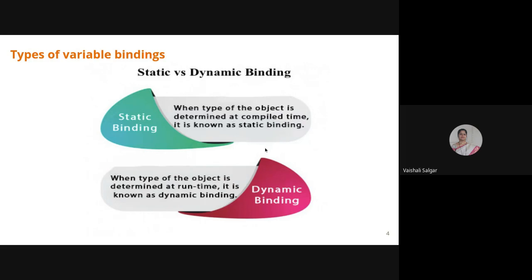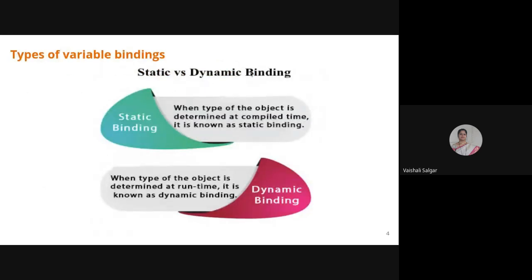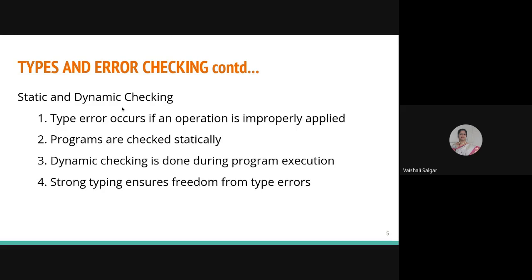Static versus dynamic binding: when the type of an object is determined at compile time, it is known as static binding, whereas when the type is determined at runtime, that is called dynamic binding, late binding, or runtime binding. Now we will see how types and error checking will be done — when checking is done at static time it is called static checking, and when done at runtime it is called dynamic checking.